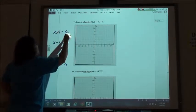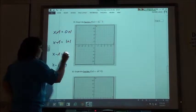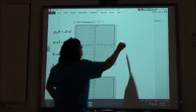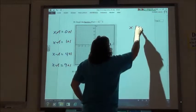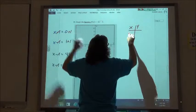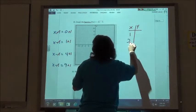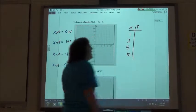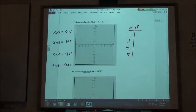So we want x to equal 1, 1 plus 1 is 2, 4 plus 1 is 5, and 9 plus 1 is 10, and those are the values we're going to put in for x on our table.